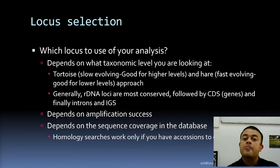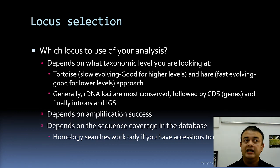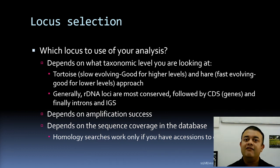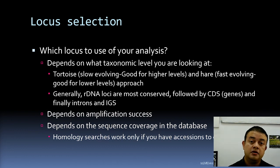For example, with Ocimum tenuiflorum — the tulsi, whose name was revised from Ocimum sanctum — you would go to the NCBI GenBank database, input the binomial name, and check how many sequences are available for each locus: how many ITS, how many 18S, how many rbcL, how many trnL–F spacer sequences. Then you choose the locus with the most coverage — that is called sequence coverage in the database.